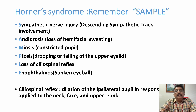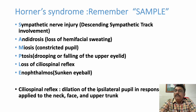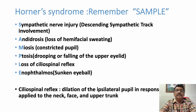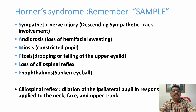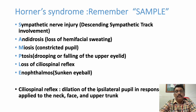Horner's syndrome can be remembered with the mnemonic SAMPLE: S — sympathetic nerve injury and descending sympathetic tract involvement; A — anhidrosis, loss of hemifacial sweating; M — miosis, small constricted pupil; P — ptosis, drooping of the upper eyelid; L — loss of ciliospinal reflex (dilation of the ipsilateral pupil when pressure or pain is applied to the neck, face, or upper trunk); E — enophthalmos, small sunken eyes.